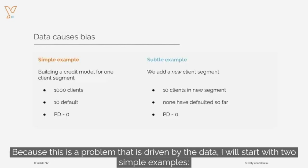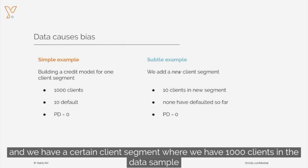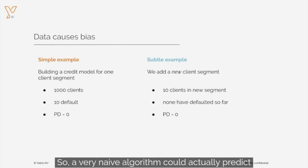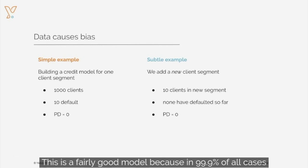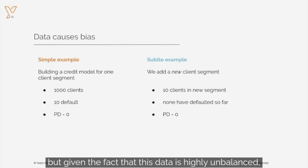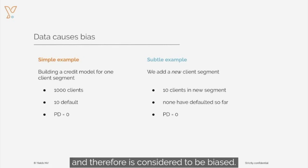Because this is a problem that is driven by the data, I'll start with two simple examples. Let's first assume that we built an algorithm to predict the probability of default, and we have a certain client segment where we have 1000 clients in the data sample and there's only 10 defaults. A very naive algorithm could predict that the probability of default for that particular segment is exactly zero. This is a fairly good model because in 99.9% of all cases the prediction is correct. But given the fact that this data is highly unbalanced — meaning there are only very few default events — this algorithm actually systematically underestimates the risk and therefore is considered to be biased.